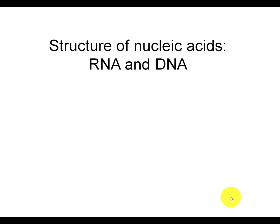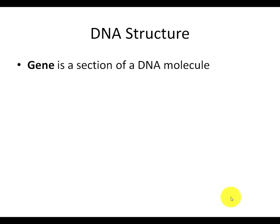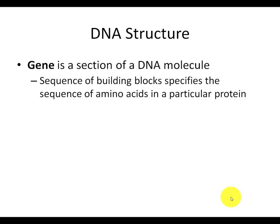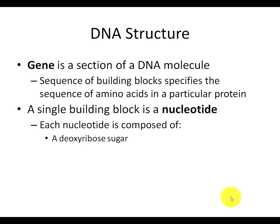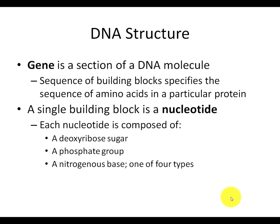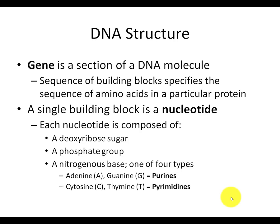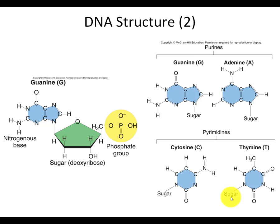Now let's talk about the structure of nucleic acids, RNA and DNA. We know that genes are made of DNA, DNA codes for RNA, RNA codes for amino acids — the RNA code gets translated into amino acid code — and amino acids join together to become a protein. A single building block of DNA is called a nucleotide. Each nucleotide is composed of a deoxyribose sugar (a pentose sugar), a phosphate group, and a nitrogenous base.